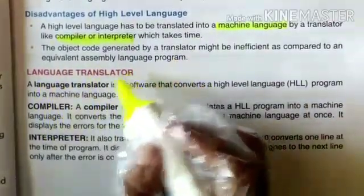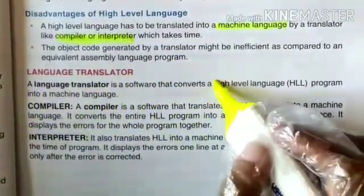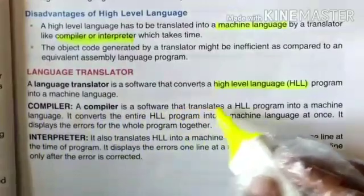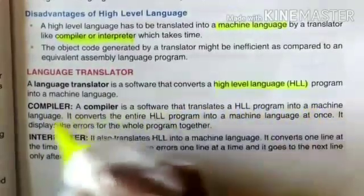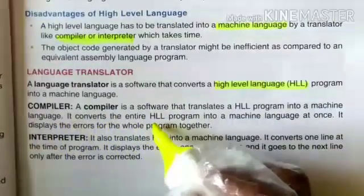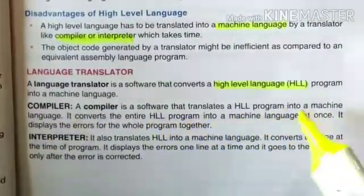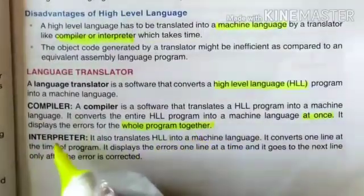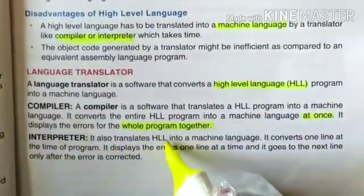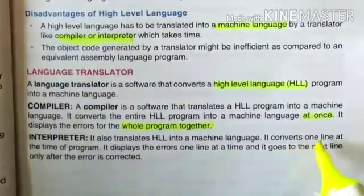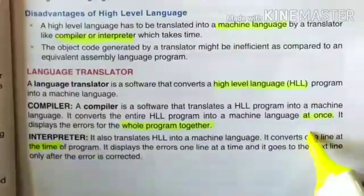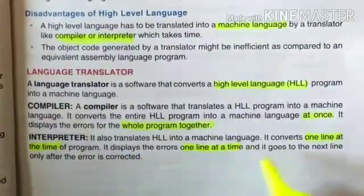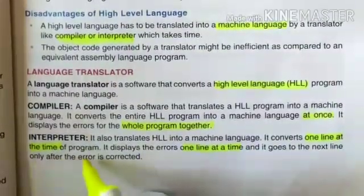A language translator is software that converts a high-level language program into machine language. A compiler translates the entire high-level language program into machine language at once and displays errors for the whole program together. An interpreter also translates high-level language into machine language but converts one line at a time, displays errors one line at a time, and proceeds to the next line only after the error is corrected.